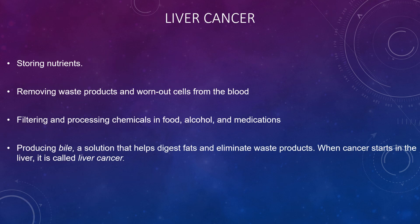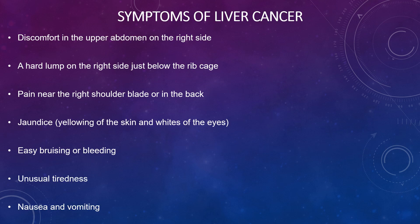Looking at liver cancer: the liver is involved in storing nutrients and removing waste products and worn-out cells from the blood, filtering and processing chemicals, food, alcohol, and medications, and it produces bile — a solution that helps digest fats and eliminate waste products. When cancer starts in the liver, it is called liver cancer.